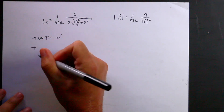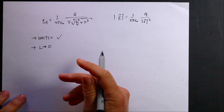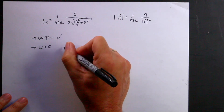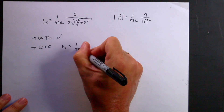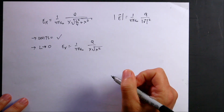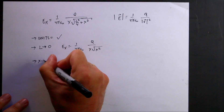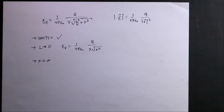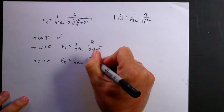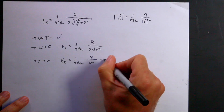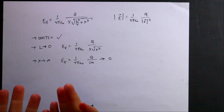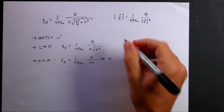Another check: what if L goes to zero? Then EX = 1/(4πε₀) * Q / (X * sqrt(X²)) = 1/(4πε₀) * Q/X², which is exactly the point charge result. And as X goes to infinity, the denominator goes to infinity, so EX goes to zero. Both limiting cases are physically correct, giving us confidence the answer is right.